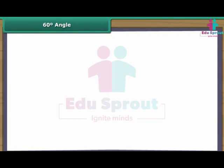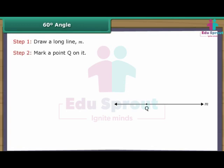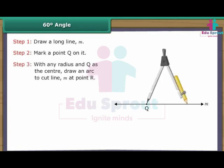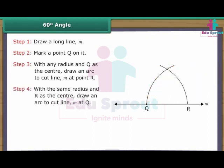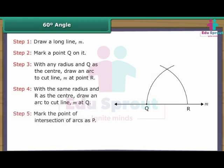Construction of 60 degree angle. Draw a long line M. Mark a point Q on it. With any radius and Q as the centre, draw an arc to cut line M at point R. With the same radius and R as the centre, draw an arc to cut the first arc at P. Mark the point of intersection of arcs as P. Join P to Q. Angle PQR is formed, which is 60 degrees.